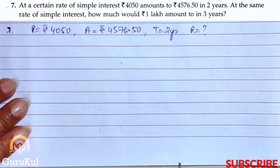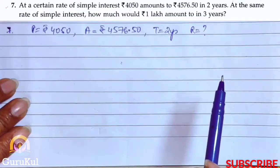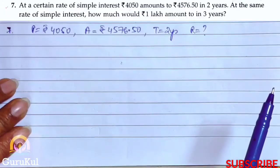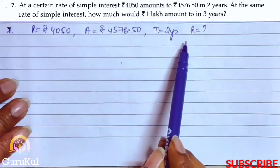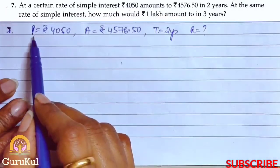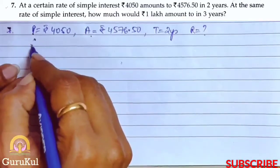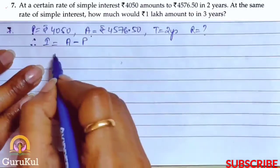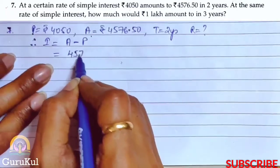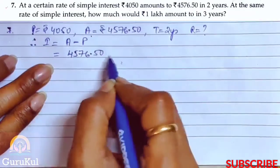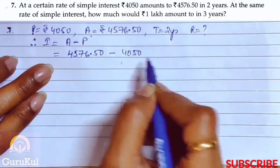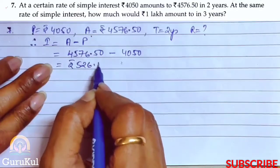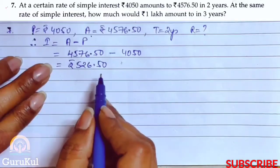After that, we are told that at the same rate of interest, how much would Rs. 1 lakh amount to in 3 years? We will solve the second half later. First, we find the rate. Principle is given, amount is mentioned. Therefore, interest = Amount − Principle = 4,576.50 − 4,050 = Rs. 526.50. So this is the interest.